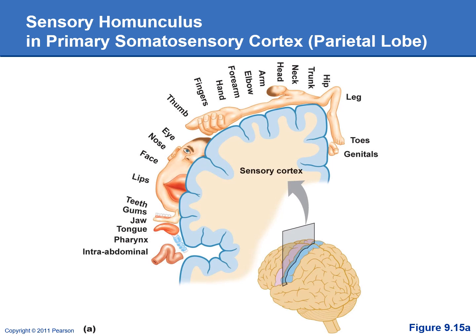We do the same thing in the primary somatosensory cortex, located in the parietal lobe, shown here in blue. At the very front of the parietal lobe is where the primary somatosensory cortex is. All sensory information comes in here from touch, proprioception — like knowing the position of your leg, whether it's bent or straight — as well as information about pain and temperature.